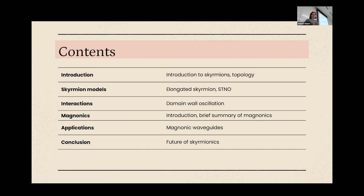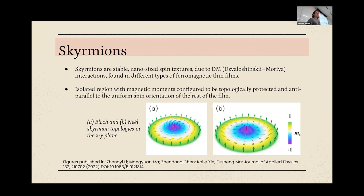Then we'll cover the applications and some future conceptual stuff — it is a fairly new topic. Basically, skyrmions are a collection of spins concentrated in a stable nano-sized texture due to the DM anti-symmetric interactions found in specifically very thin ferromagnetic films. This isolated region is configured to be topologically protected.